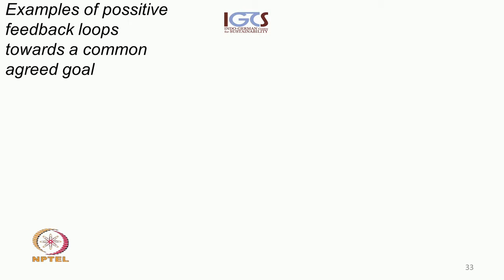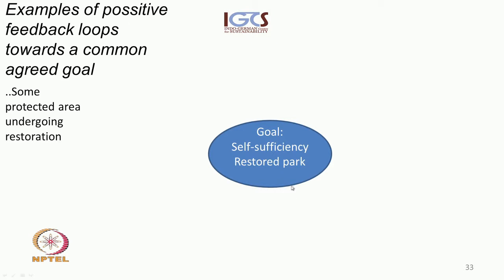This is an example of positive feedback loops towards a common agreed goal, developed in a protected area which is undergoing restoration. The team was able to agree upon a common goal: the self-sufficiency and restoration of the park — achieving self-sufficiency and a restored, beautiful park.